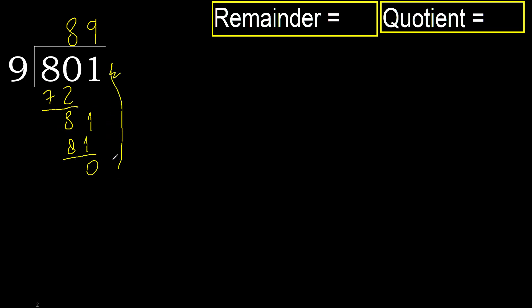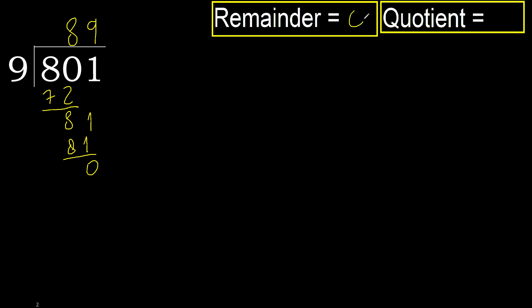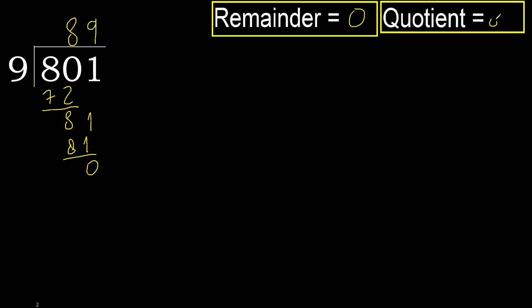There is no next number, therefore finish. 0, therefore 801 divided by 9 is 89.